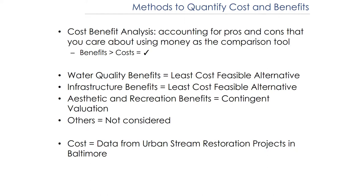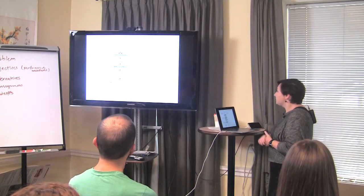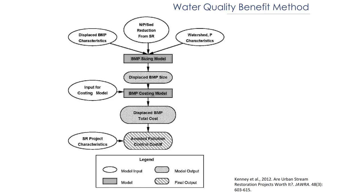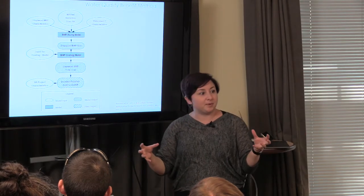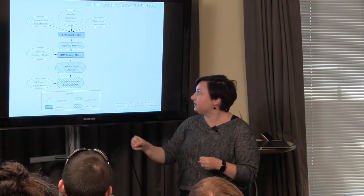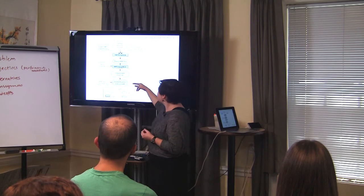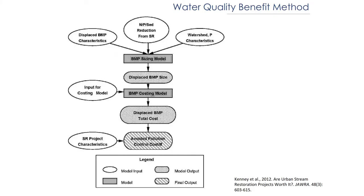We were able to get cost data from urban stream restoration projects in Baltimore. For the water quality model, to go from things like nitrogen and sediment reduction into a dollar value linked to cost per linear foot of restored stream, we had to think about what best management practices would also achieve nitrogen and phosphorus reductions. We developed a BMP sizing model — looking at how large those BMPs had to be — and then costed them using standard engineering restoration cost approaches.